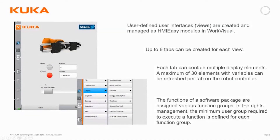These picture elements can then be connected to variables or events in the robot controller. These objects we put in can also be connected to the function groups and the user rights of the KUKA controller, so that you can tell the system which functions are available for which users.